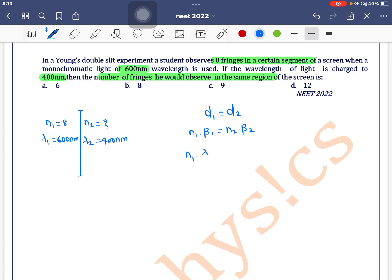Beta is lambda d by D. Lambda 1 d by D is equal to n2 into lambda d by D.